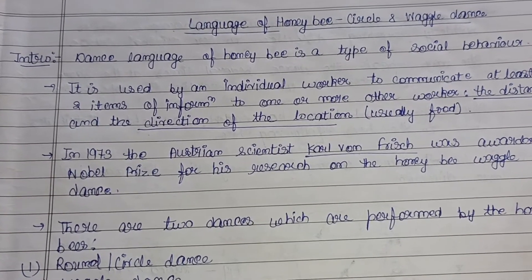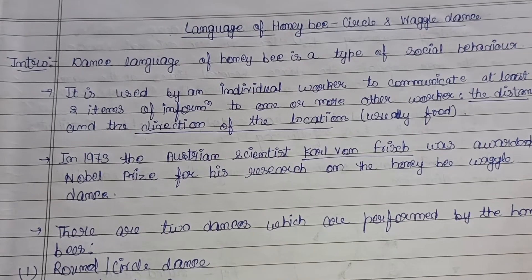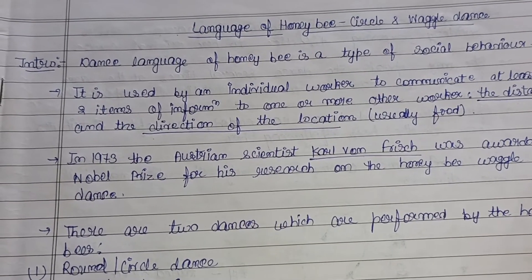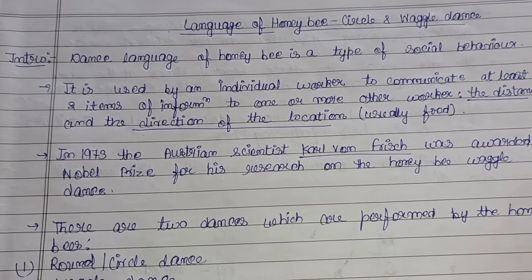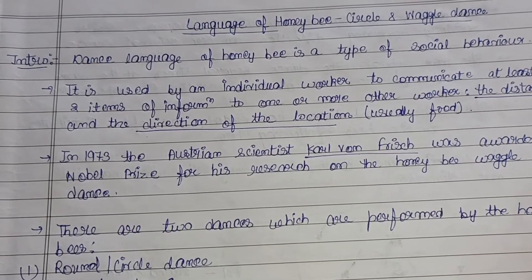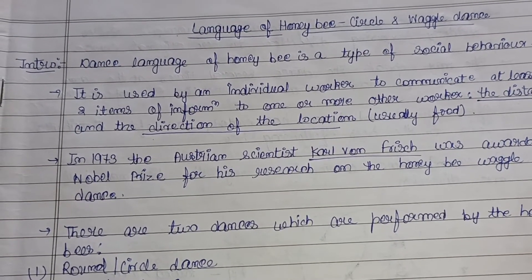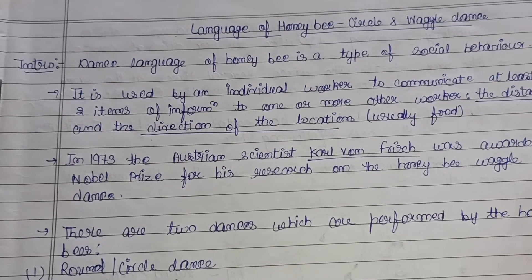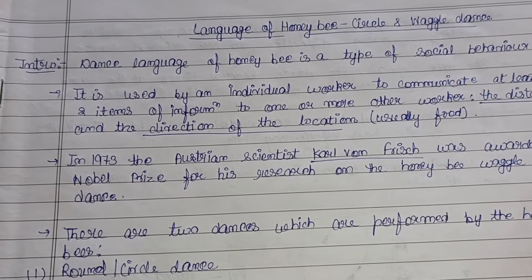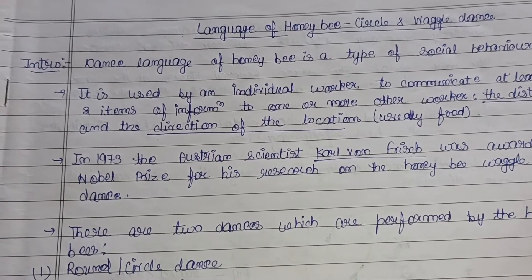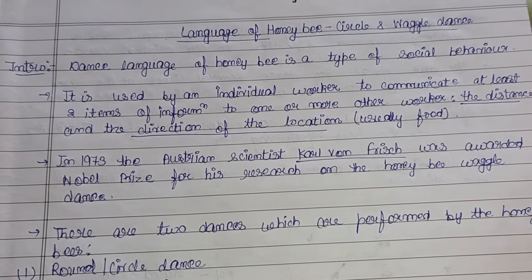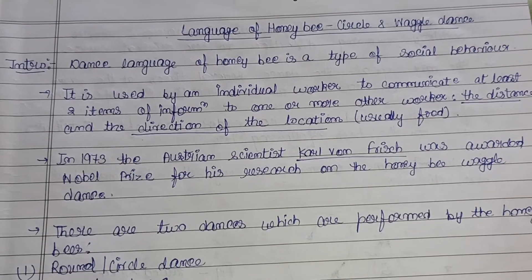Introduction: the dance language of the honeybee is a type of social behavior — the way through which honeybees communicate with each other. It is used by an individual worker to communicate at least two items of information to one or more other workers: first, the distance, and second, the direction of the location — usually a food source.